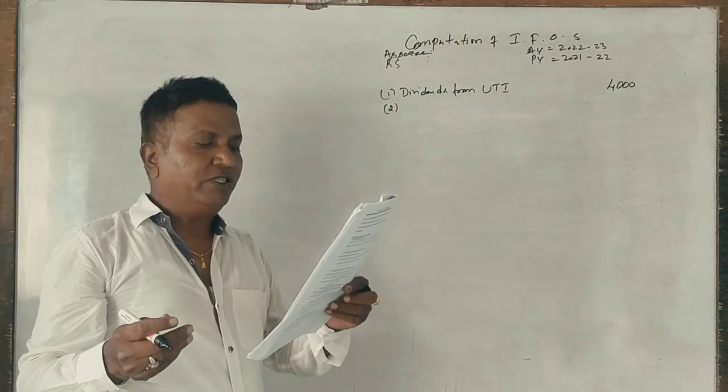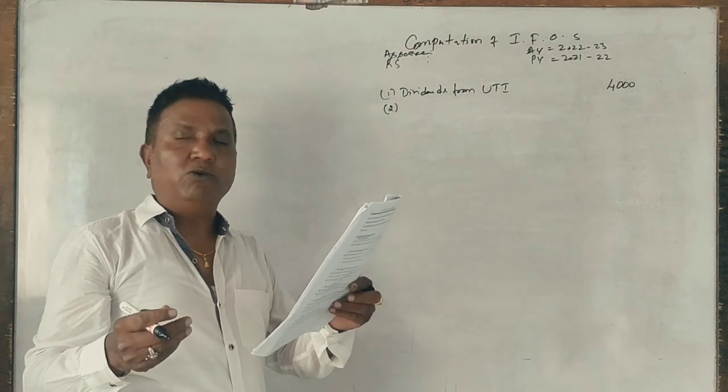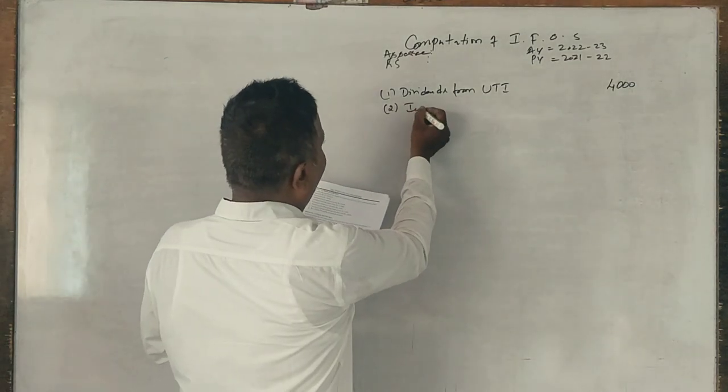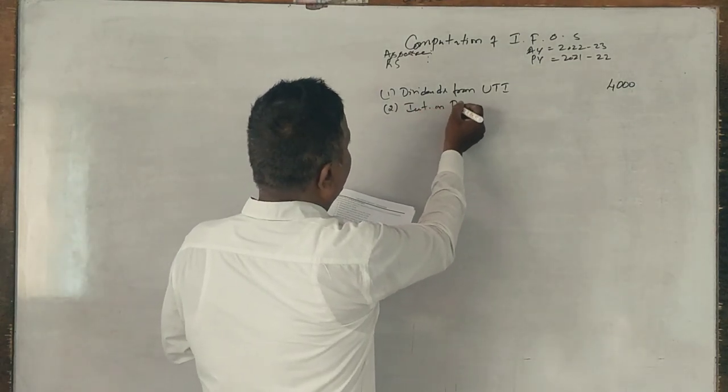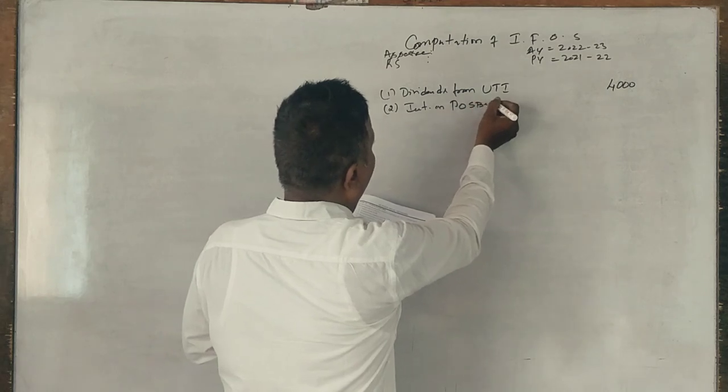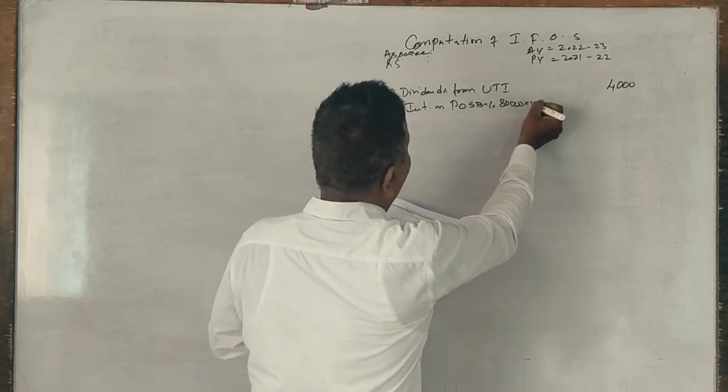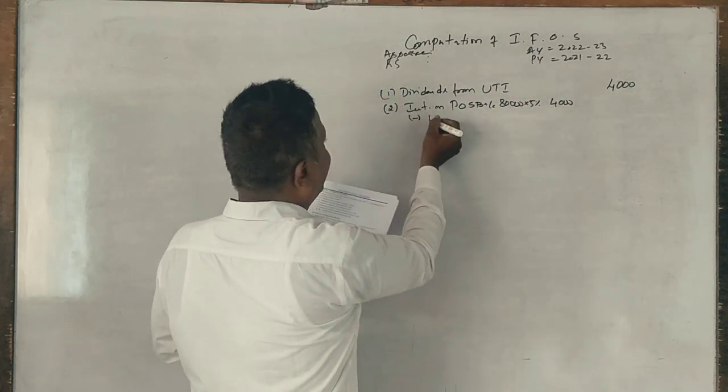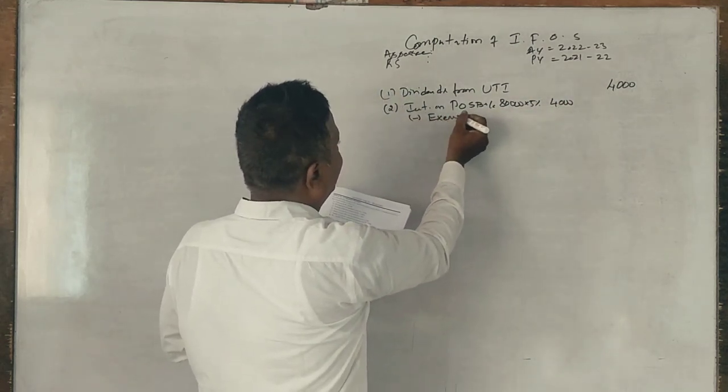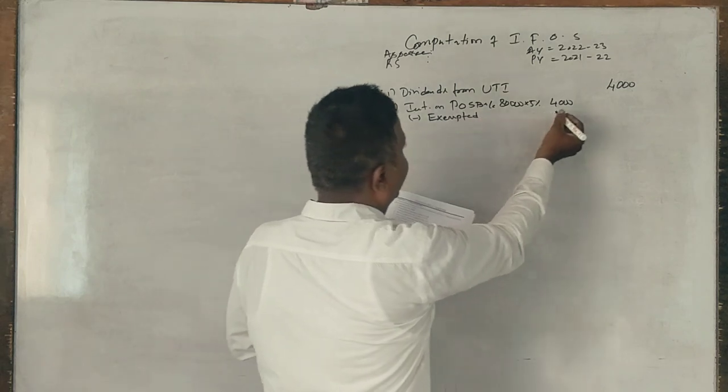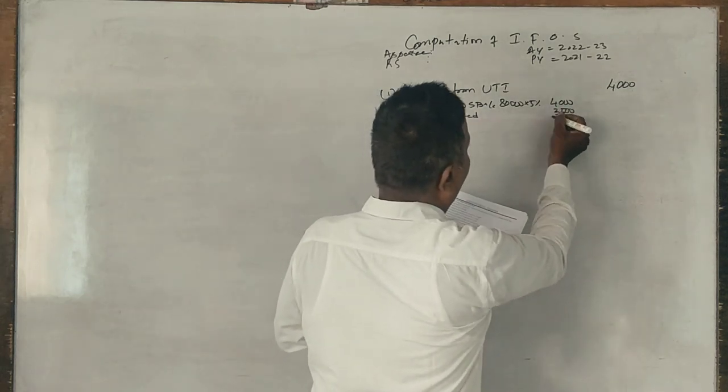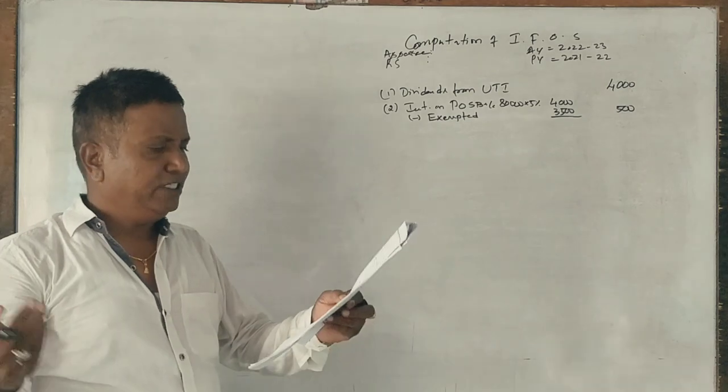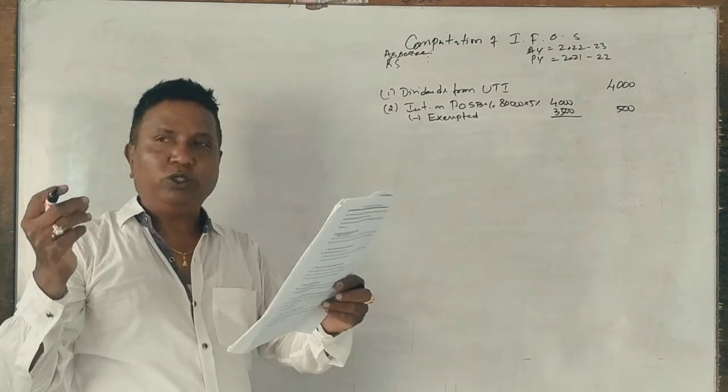80,000 in post office savings bank account earns interest at 5 percent per annum. Interest on post office savings bank account, 80,000 into 5 percent is 4,000. But exempted is 3,500, then the rest of the amount, 500, is fully taxable.